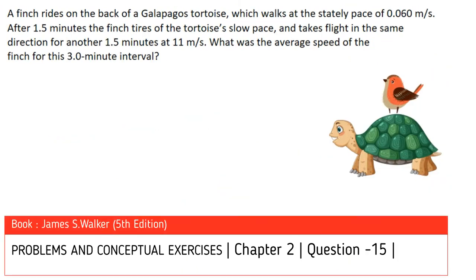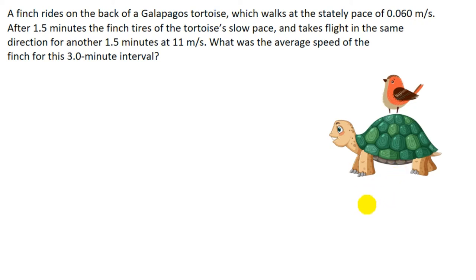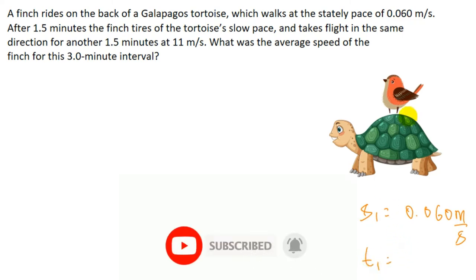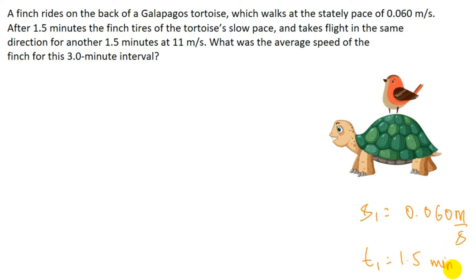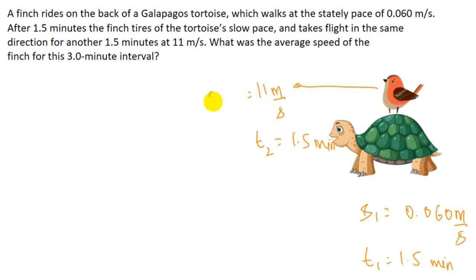In this question, a finch rides on the back of a tortoise walking at speed s1 = 0.060 meters per second for t1 = 1.5 minutes. After that, the finch takes flight in the same direction at speed s2 = 11 meters per second for t2 = 1.5 minutes. We have to calculate the average speed of the finch over this three-minute interval.